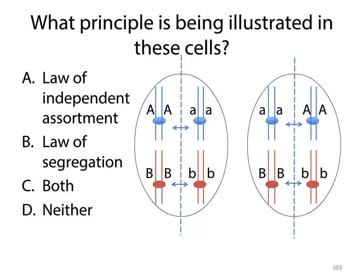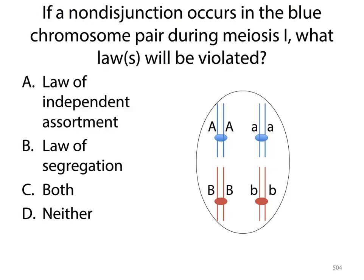Okay, so once again, another question for application. Take a minute, pause lecture, be honest with yourself and address this question. Hopefully you guys chose A, because it's a 50-50 shot that they line up with big A's and big B's on the same side, but it's also a 50-50 shot that it goes the other way. Yet another application question — just a reminder that non-disjunction means that your chromosomes don't separate. So if the blue chromosomes don't separate during meiosis I, what law will be violated? Which law is that of splitting? That would be the law of segregation, therefore the answer is B.